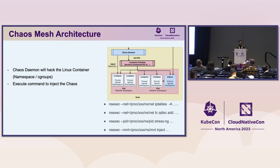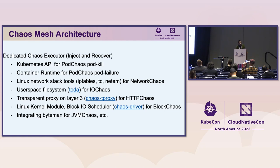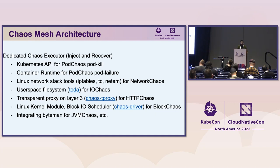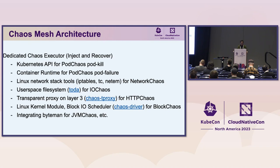Different types of chaos experiments have different dedicated executors. For example, the Kubernetes API is used to implement pod chaos, pod kill, and container runtime scenarios. Linux kernel network and command-line tools like iptables are used to implement network chaos. There is a built-in user-mode executor for IO chaos, a layer-3 transport protocol for HTTP chaos, a built-in kernel module — the block IO scheduler chaos driver — for block chaos, and the existing Byteman tool integrated to implement JVM chaos.